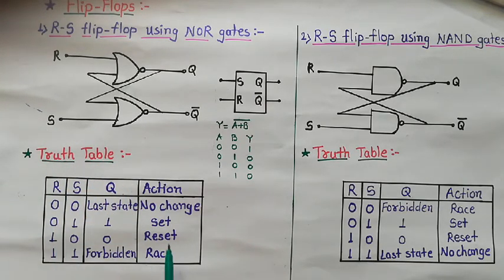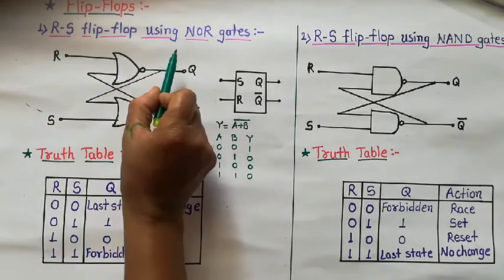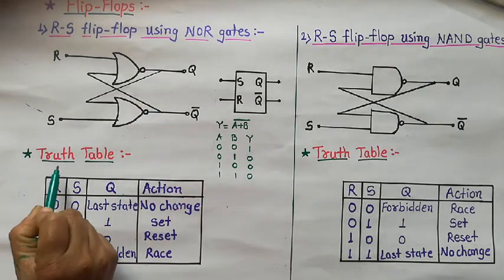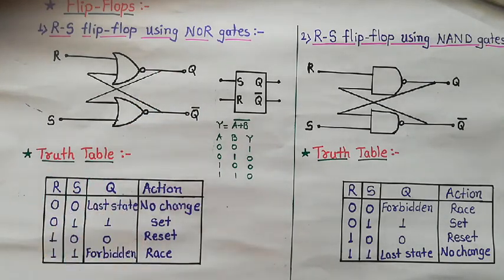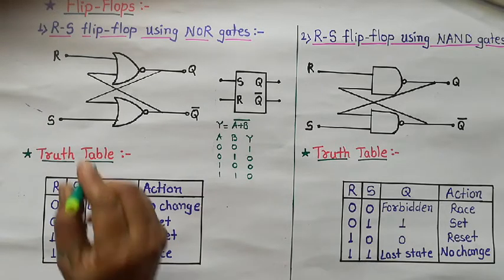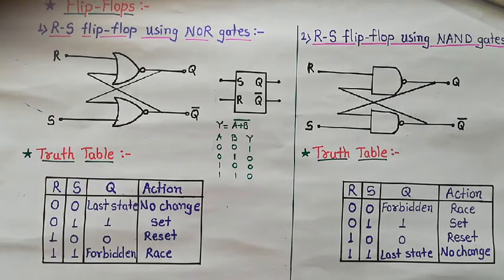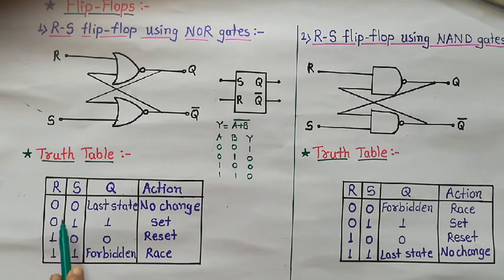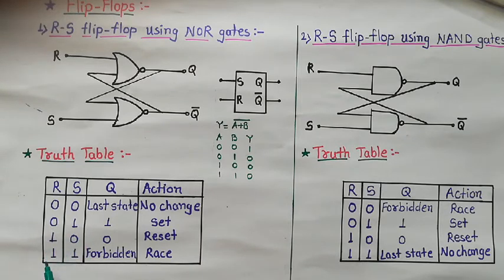This table shows the working of this RS flip-flop, which is known as the truth table. The truth table shows the working of any logic circuit. R and S have four conditions: R=0, S=0; R=0, S=1; R=1, S=0; and R=1, S=1.